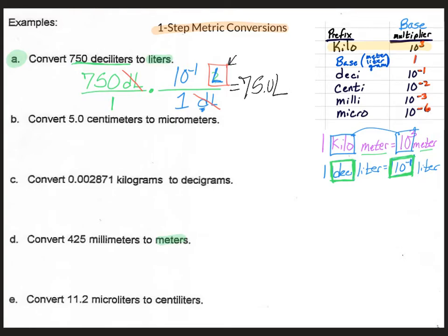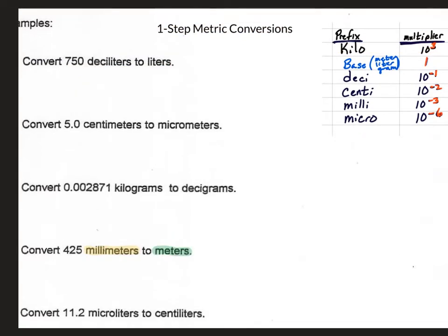Please make sure you know how your calculator works, especially with the exponent part. There are different variations of how it is written on calculators. Let's start with letter D. Here we're going from millimeters to meters. We know this is a one-step metric conversion because we're going to one of the base units — in this case meters.